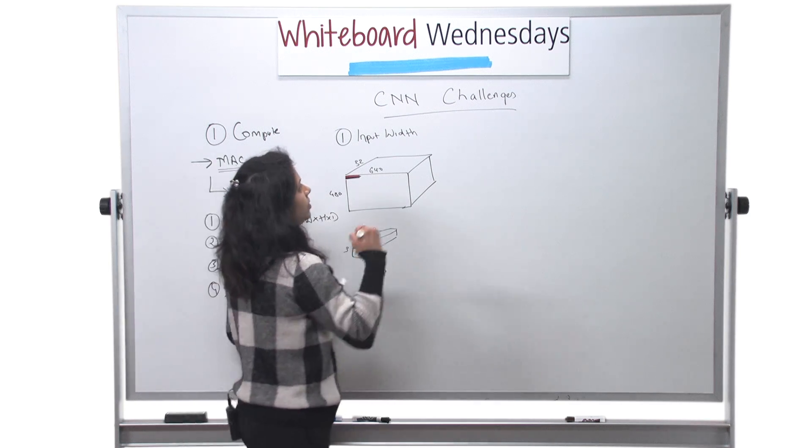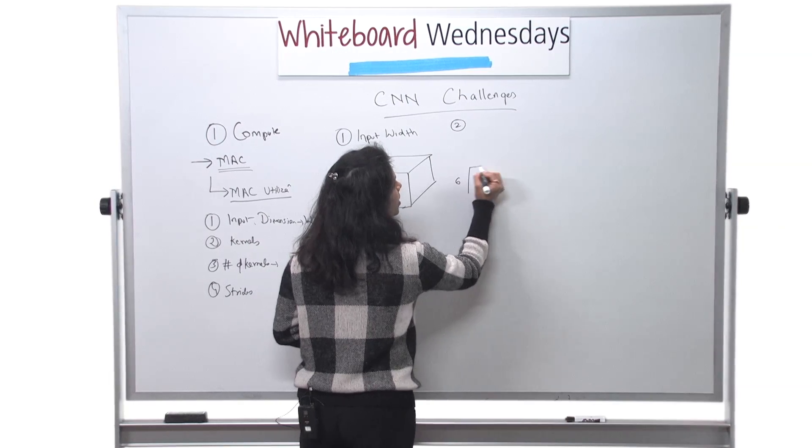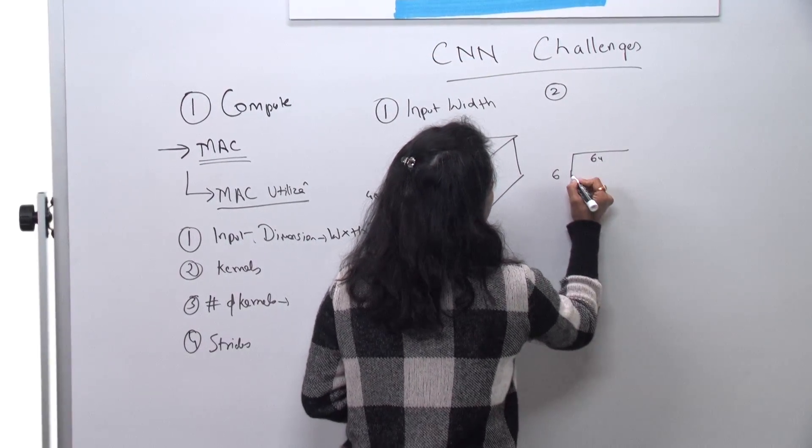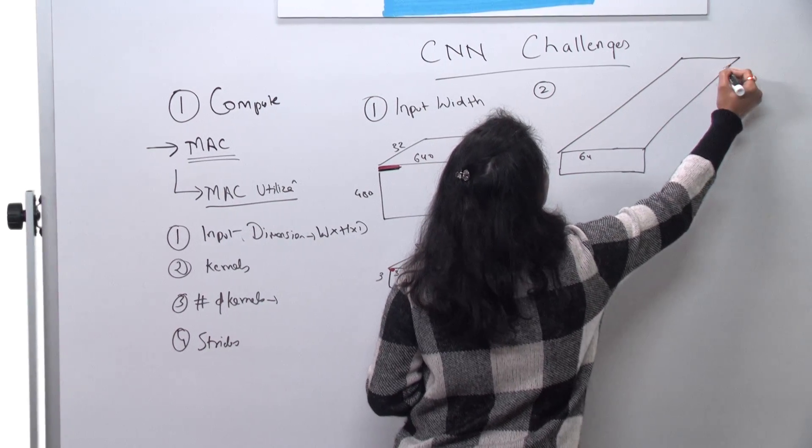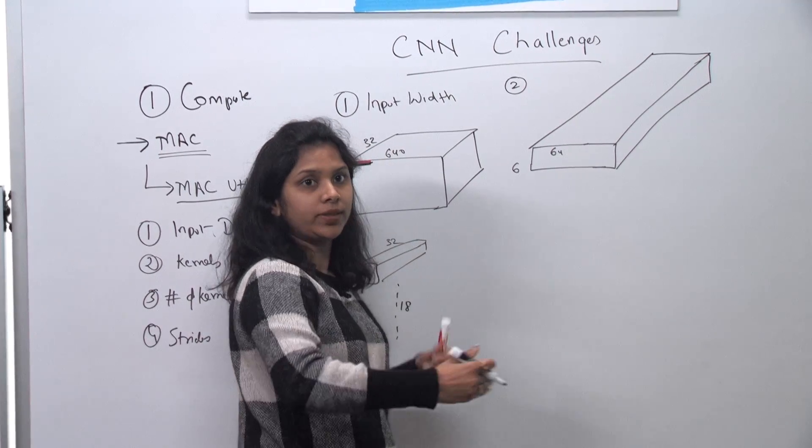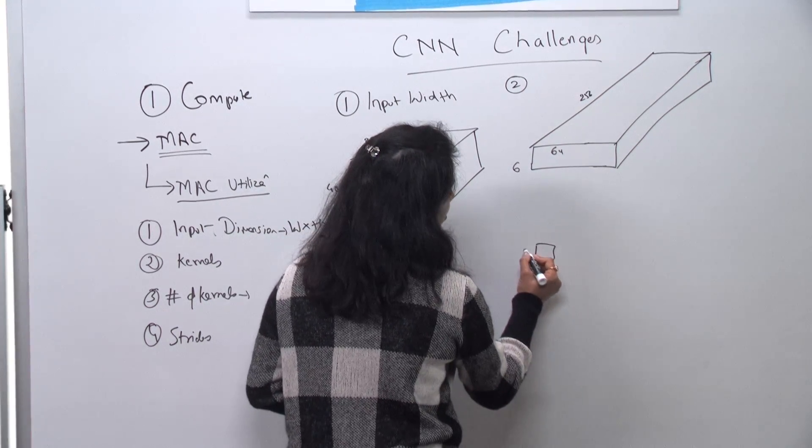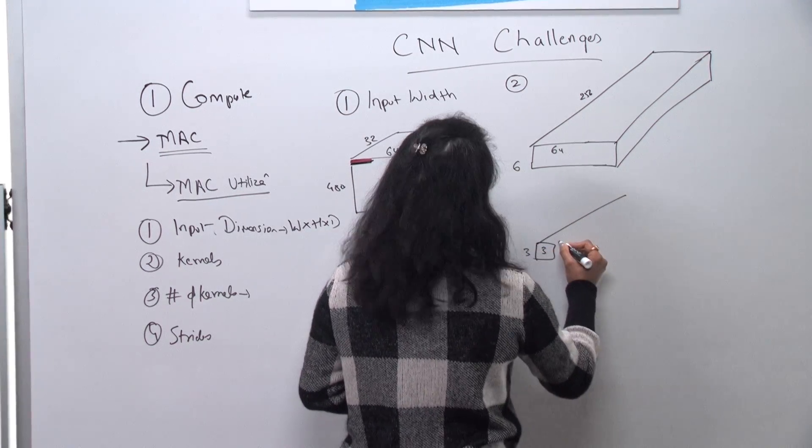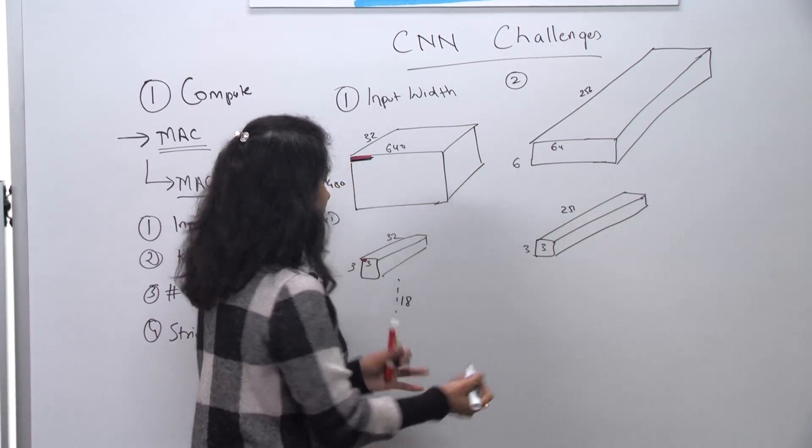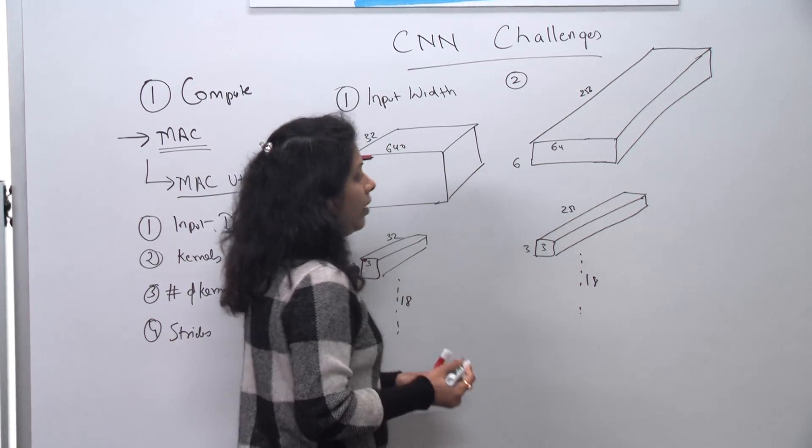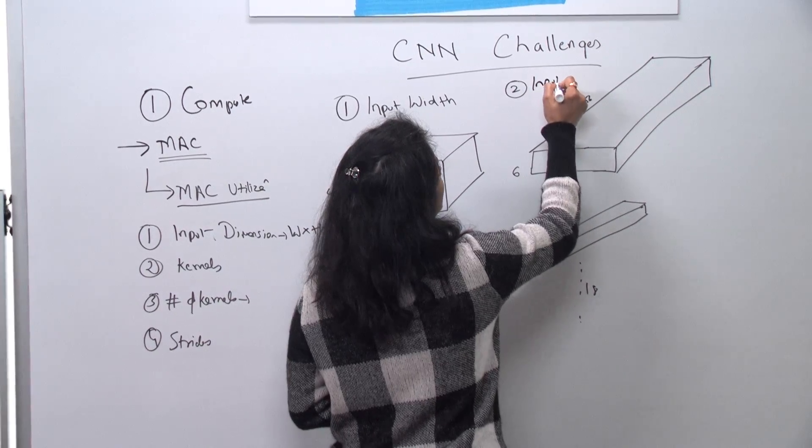Now let's say my second case where my spatial dimensions are not that big. I have something like 6 by 64. But my depth, this is a very common thing which keeps happening with neural network. As we go deeper in the layer, the spatial dimensions start becoming small and the depths start becoming big. So let's say I have 6 by 64, but my depth is 256. Same thing with the coefficients. The coefficients are still 3 by 3. And now I have something 256. And I have so on and so forth. In this kind of situation, I can actually do vectorization along my input depth.